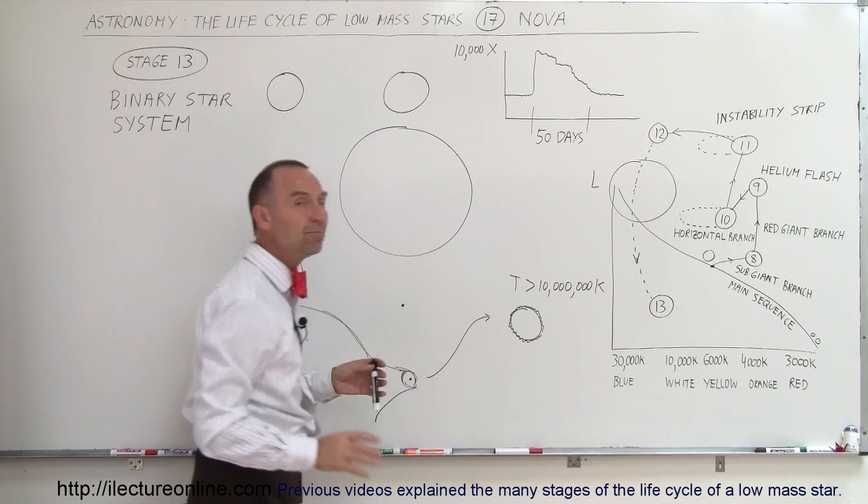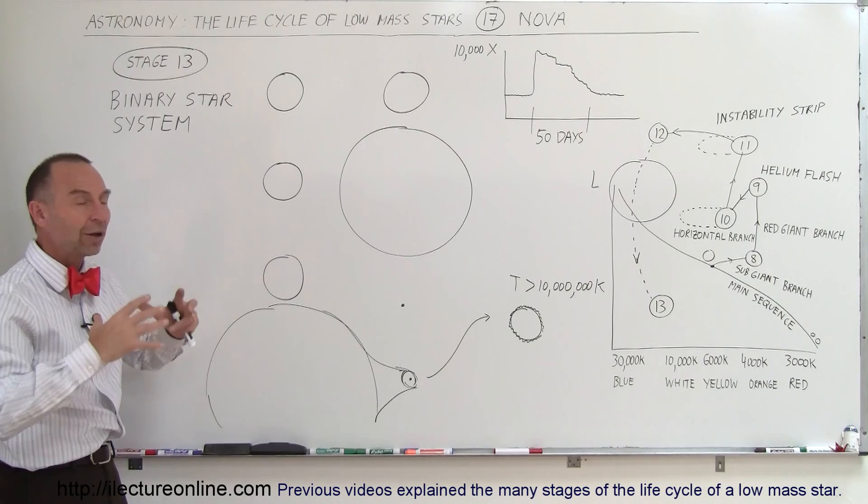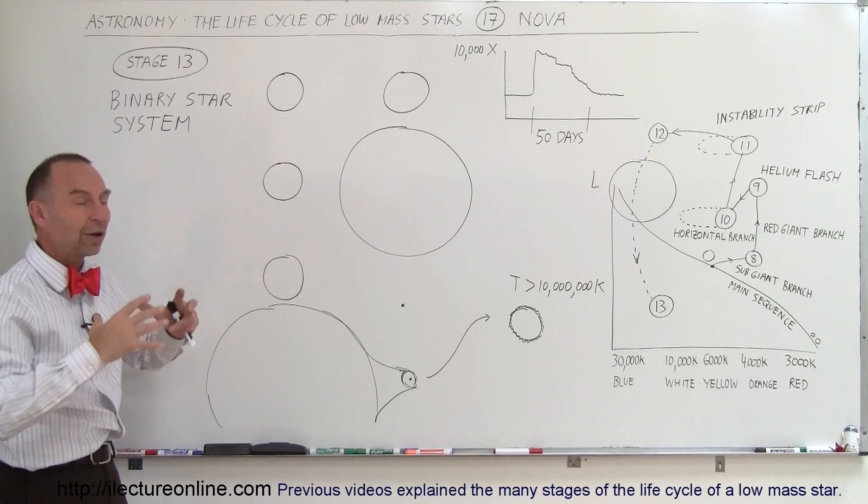When that happens, the hydrogen will begin to fuse on the surface. This is not just a slow process; it's almost an explosive process. All of a sudden, all the hydrogen on the surface of the white dwarf will begin to fuse into helium very, very fast.